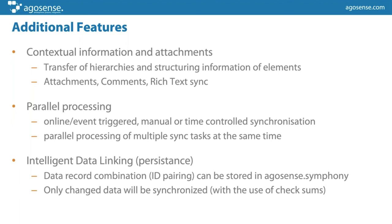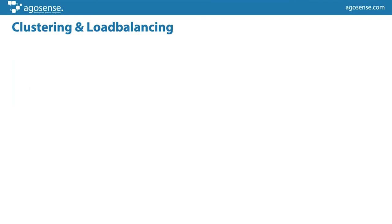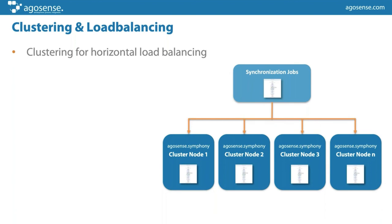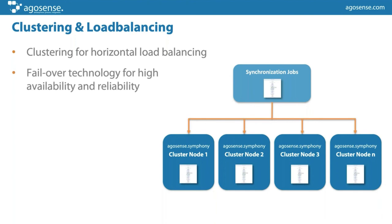Load balancing is always a topic in large organizations with high load. Symphony can be run in a cluster environment — we simply add additional Symphony servers. With a small configuration they know of each other and can take over load and balance it. If one node goes down, all other nodes take over the complete work and jobs and perform as if nothing happened. For the end user or administrator there will be no change — maybe a slight performance lag if one server is missing, but there's no data loss and no job loss; everything is taken over completely automatically.